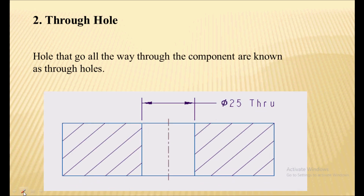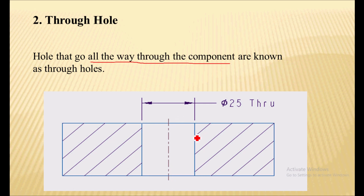The second type is the through hole. The name itself indicates that a hole that goes all the way through the component is called a through hole. Here you can see an image — in this component, a 525 mm hole goes throughout the component, hence it is called a through hole.